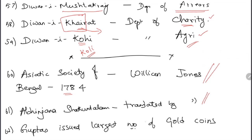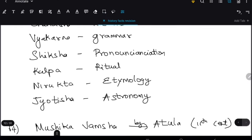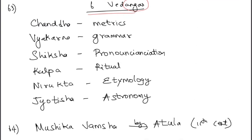Guptas issued the largest number of gold coins — the first to introduce gold coins were the Kushanas, but the largest number was issued by the Guptas. There are six Vedangas (limbs of the Vedas): Chanda (metrics), Vyakarana (grammar), Shiksha (pronunciation), Kalpa (ritual), Nirukta (etymology), and Jyotisha (astronomy).